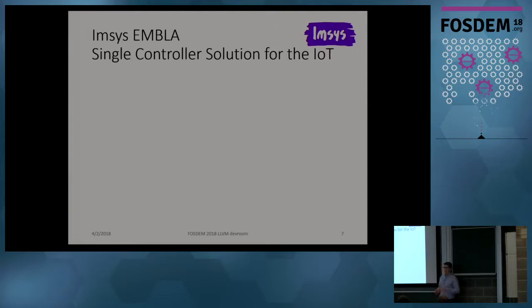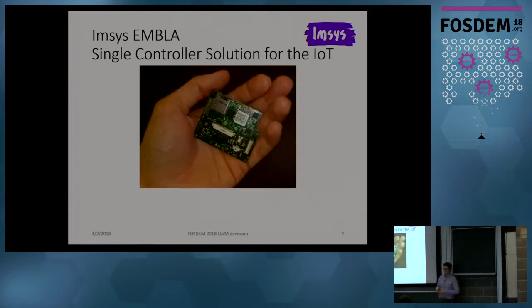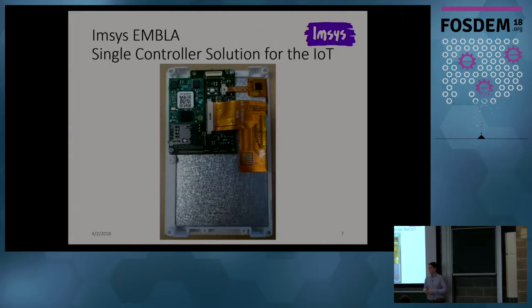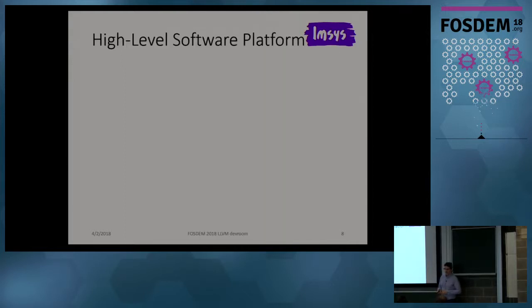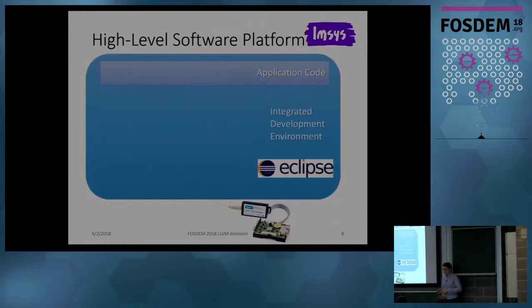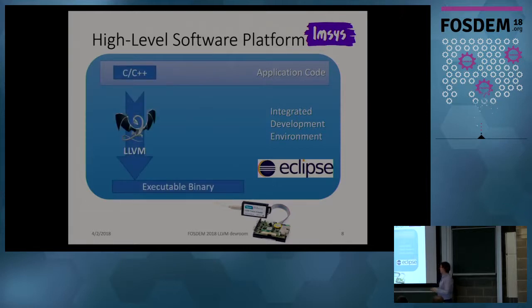As a device, we want to provide a single controller solution for IoT applications — that's the IMSIS AMBLA. It's a small handheld device with IO capabilities. It can be connected directly to an LCD display and a touch panel, with an extension board for which we have a reference design. Software-wise, you can develop your application in C and C++, in which case we use LLVM to generate executable code. We also support Java execution.